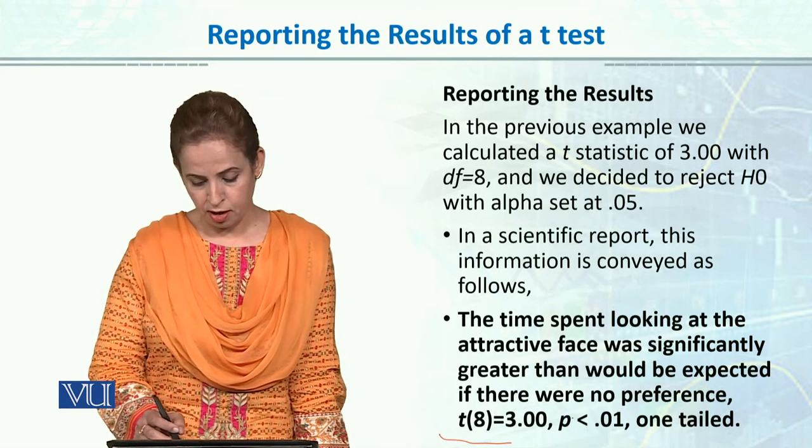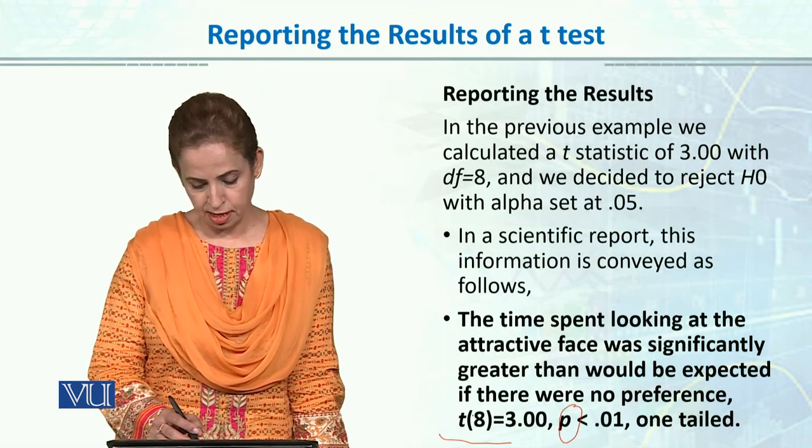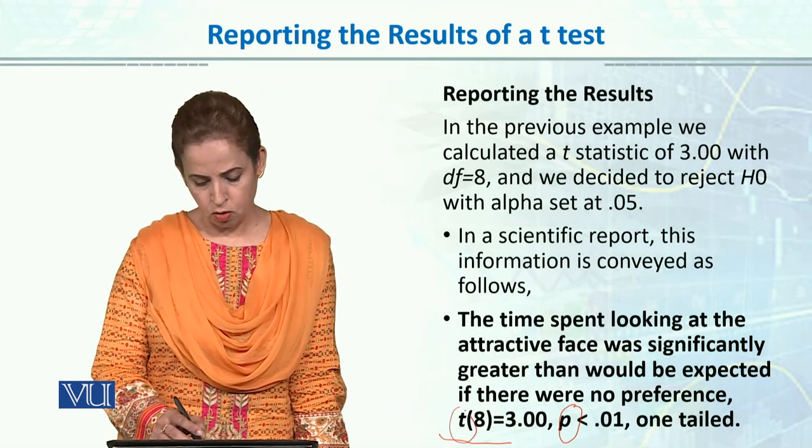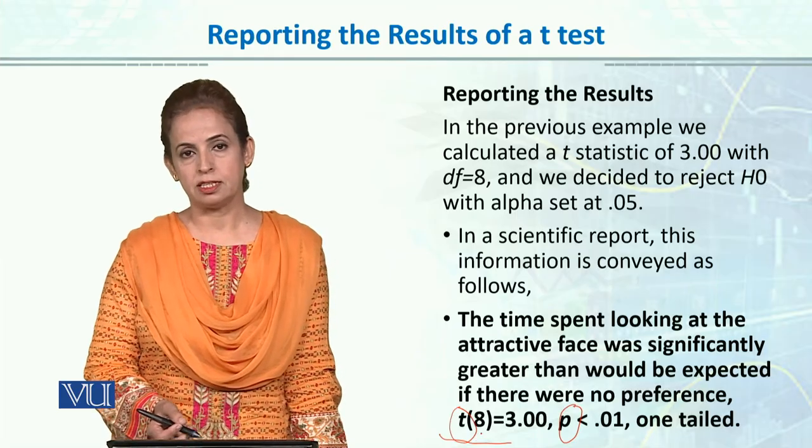Both t and p are italicized. You state the degrees of freedom and then indicate significance.